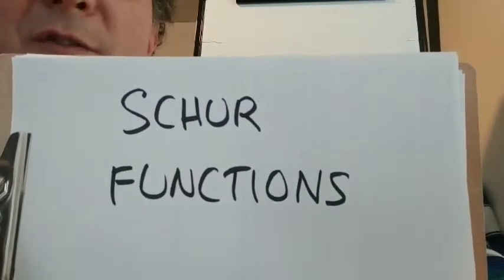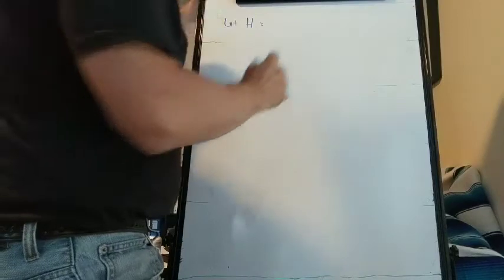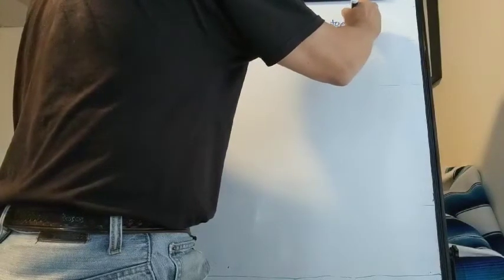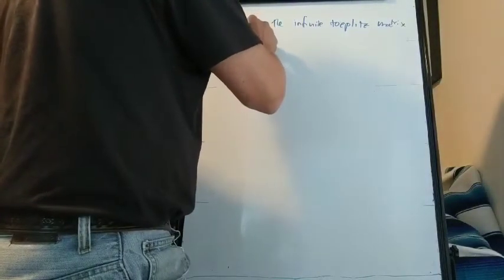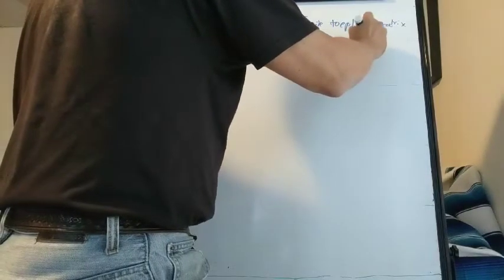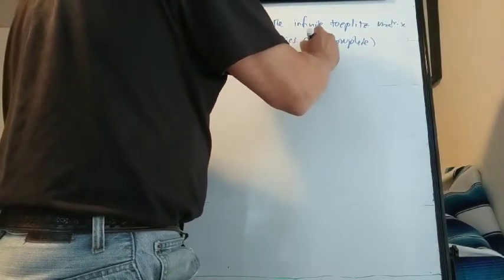It turns out that there is a name for the non-intersecting path family symmetric functions that we've been working on. They're called Schur functions. Let H be the infinite Toeplitz matrix whose entries are complete homogeneous symmetric functions.